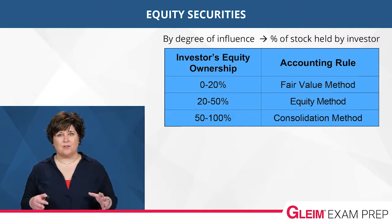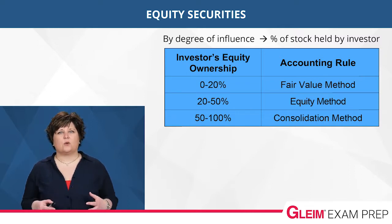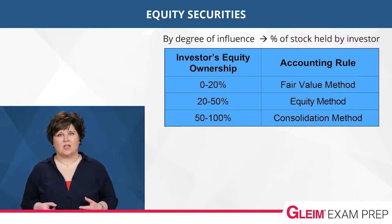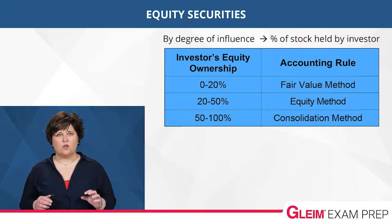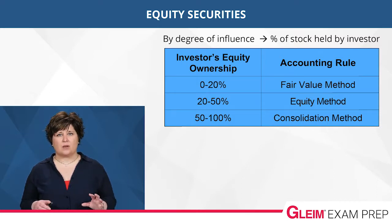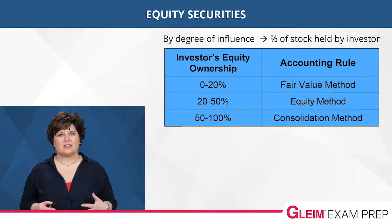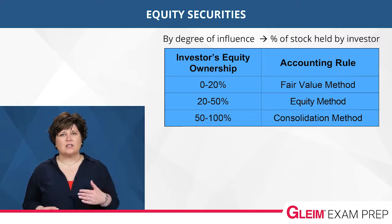If you own 20–50% of the stock of the other company, you begin to have more influence or more control over the decisions and direction of the company you've invested in. In this case, you will use the equity method to account for your investment. In the final category, if you own 50% or more of the company, you have major influence and control, and the consolidation method is required to account for your investment.